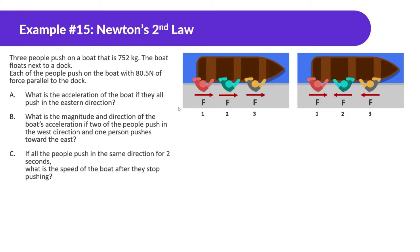So the first example: three people push on a boat that is 752 kilograms. The boat floats next to the dock. Each of the people push on the boat with 80.5 newtons of force parallel to the dock. What is the acceleration of the boat if they all push in the eastern direction? For part A, we're looking at this diagram here because they're all pushing to the right or east.